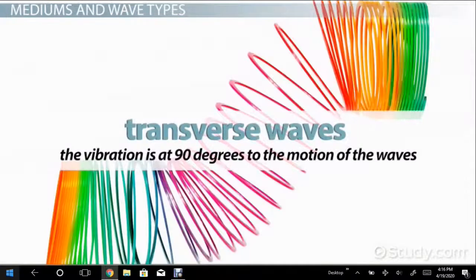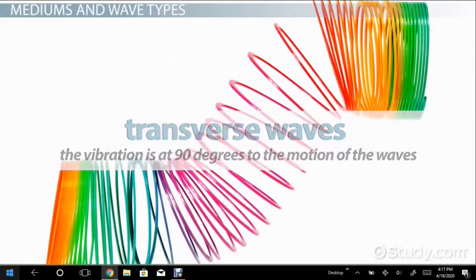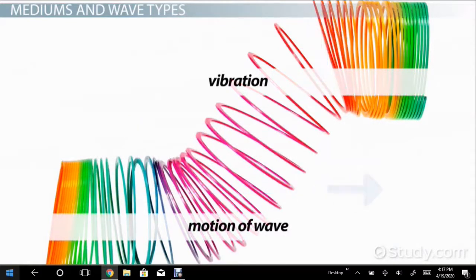Transverse waves, on the other hand, is where the vibration is at 90 degrees to the motion of the waves. This time we have to move the slinky side to side. Light waves and water ripples are transverse, but sound waves are longitudinal.